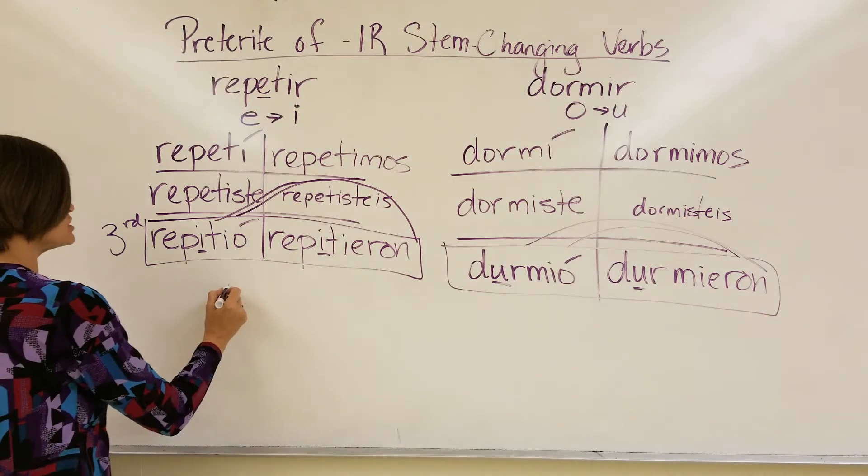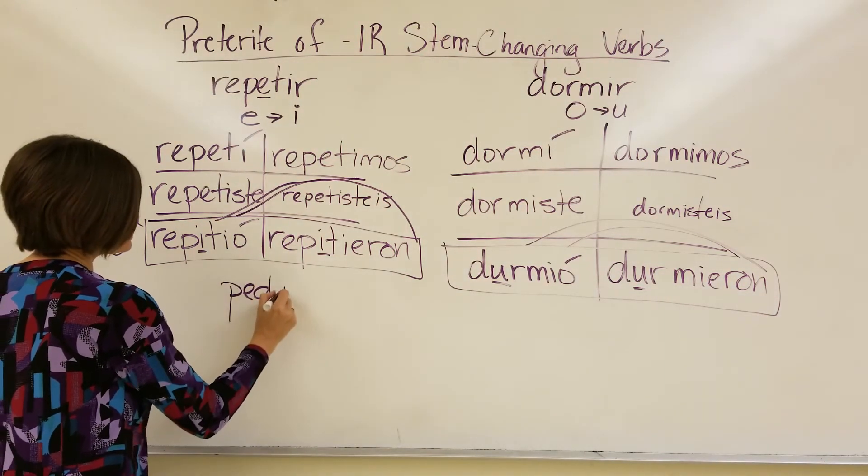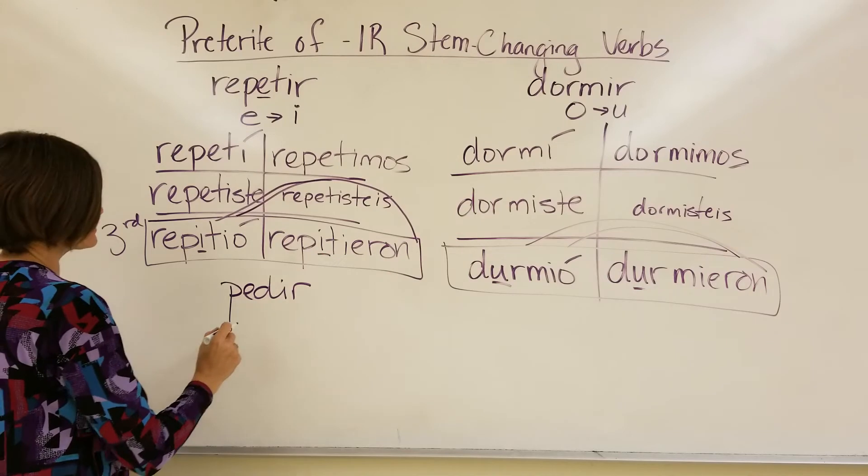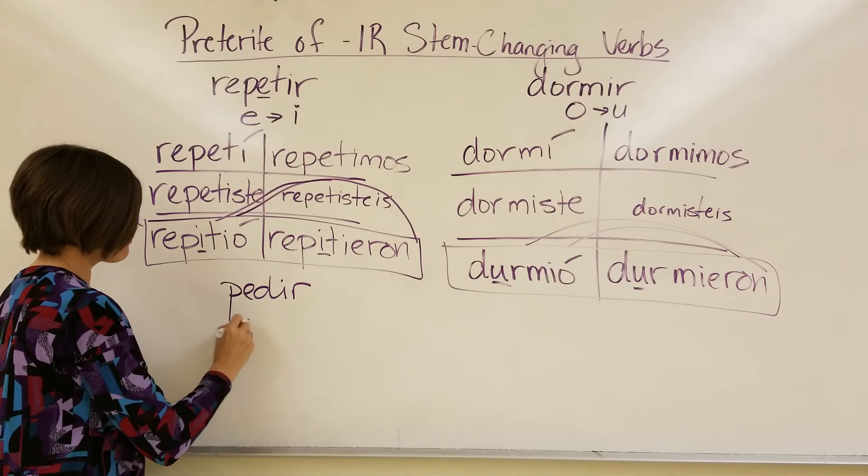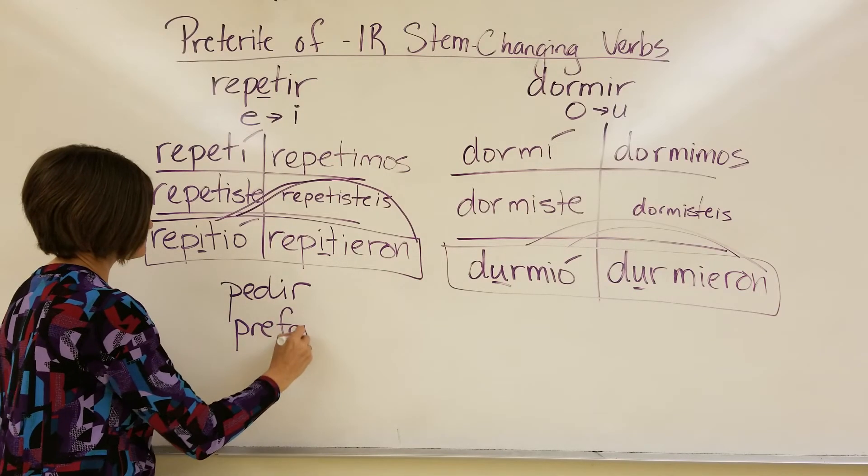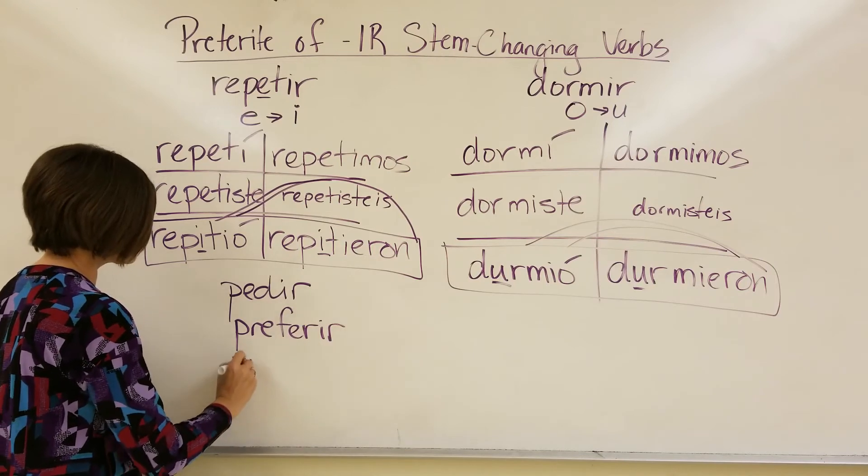So, we've got quite a few IR stem-changing verbs, like pedir, preferir, morir.